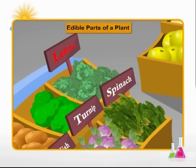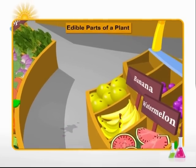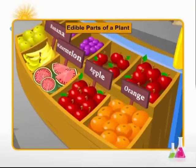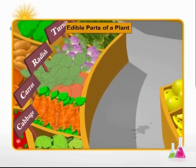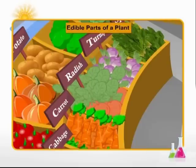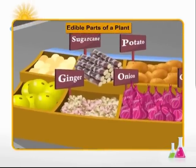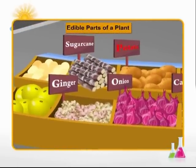Leaves of plants like lettuce and spinach are eaten. Fruits are a source of various nutrients which are consumed both raw and cooked — for example, apples and oranges. Roots are the underground part of the plant that is eaten both raw and cooked. Carrot, radish, and turnip are examples of edible roots.